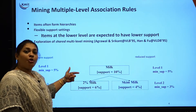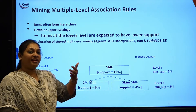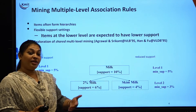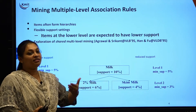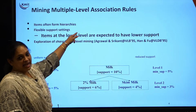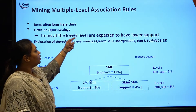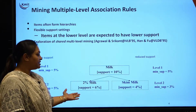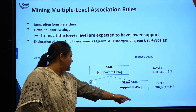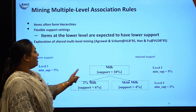You can see the different levels — level one, level two, and so on. You can take the hierarchy of a college: first you have a director, then the principal, then faculty, then students. Within students you can classify further into fourth year, third year, second year, and first year. Items form hierarchies. With flexible support settings, items at the lower level are expected to have lower support — just like skim milk, which fewer people buy, has a lower threshold than normal milk. This is multi-level mining.